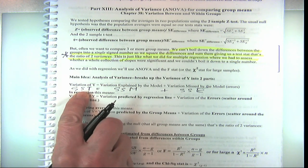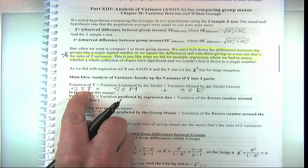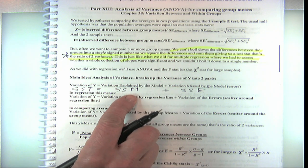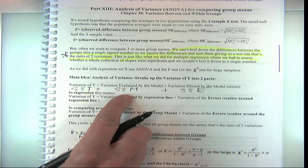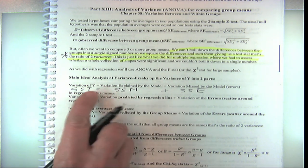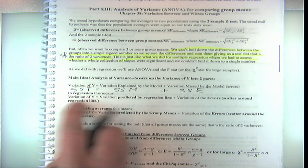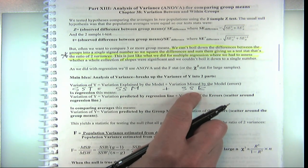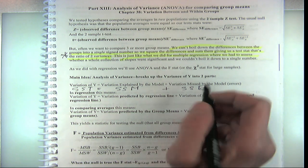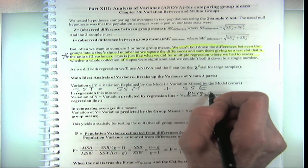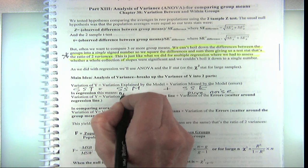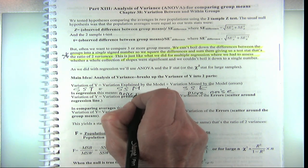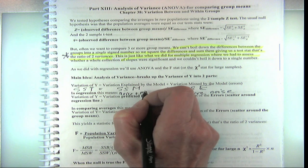If I'm interested in exam scores and trying to predict them by the model of what year you are in school, that would be our model — what year you are in school would help us. The differences in those means would be able to predict the exam scores, and then you'd have some error around that model. This error is just pure noise, and the model is noise and maybe — we're hoping — a signal inside it. But the null says no signal, just noise.